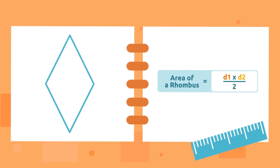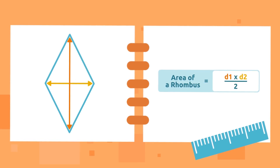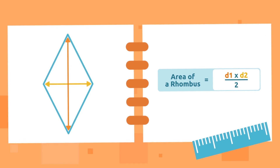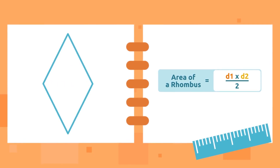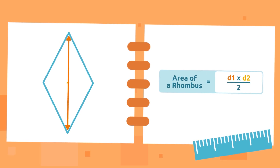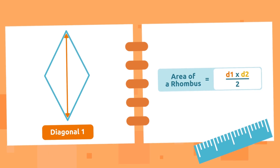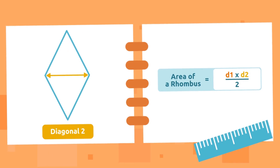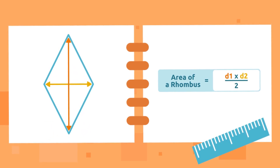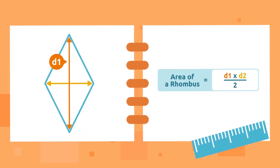The area of a rhombus is equal to the first diagonal times the second diagonal, divided by two. Diagonals are lines that go from one vertex to another vertex. There is one diagonal longer than the other — that is why we call the longest one diagonal one (D1) and the shortest one diagonal two (D2).